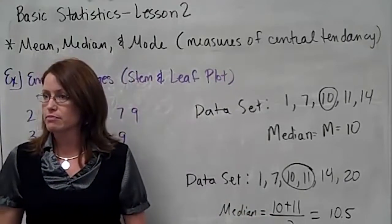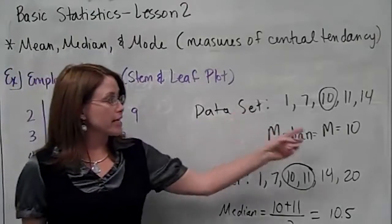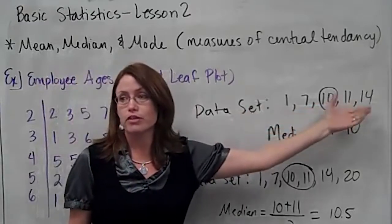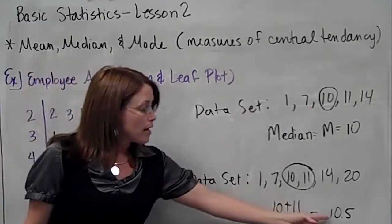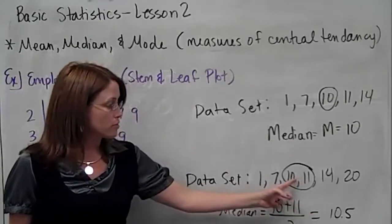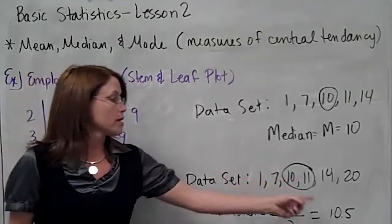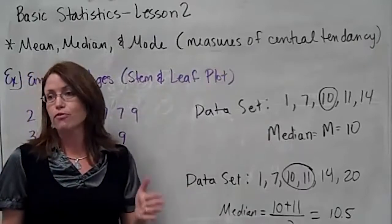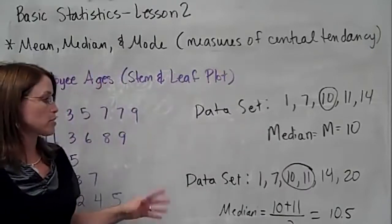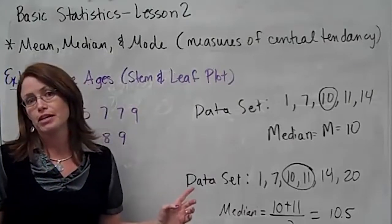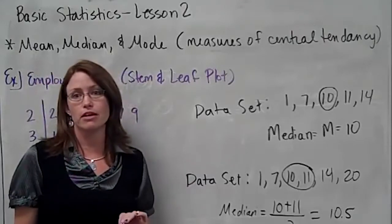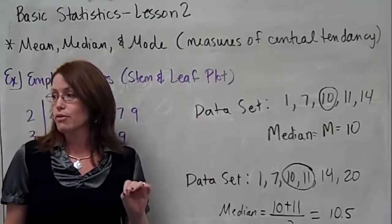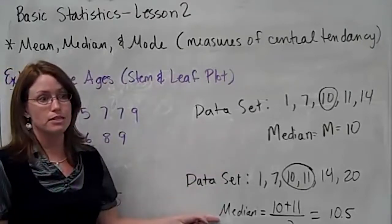How would I interpret that? For the first example, at least half of the data is at 10 or below — three of them are, so that's at least half — and at least half are at 10 and above. For the second example, at least half of the data is at 10.5 or below and at least half are at 10.5 and above. It's marking off the halfway point — which I'll later call the 50th percentile. You hear the word percentile at the doctor's office when children are growing up: height, head size, weight. We'll talk more about percentiles later.